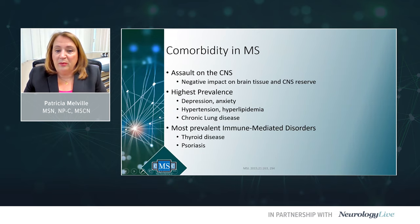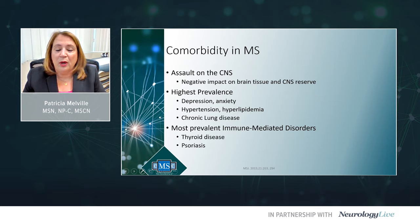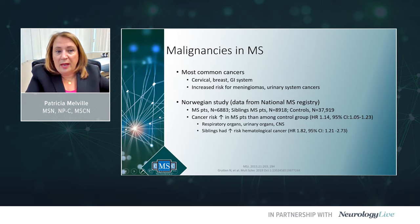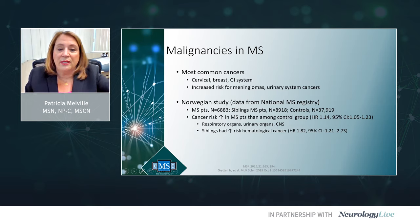Comorbidities in MS have a negative impact on brain tissue and the central nervous system reserve. The most prevalent comorbidities in MS are depression and anxiety, followed by hypertension, hyperlipidemia, and chronic lung disease. The most prevalent immune-mediated disorders are thyroid disease and psoriasis. Malignancies can also occur; the most common cancers are cervical, breast, and digestive system. Patients with MS may be at increased risk for meningiomas and urinary system cancers.